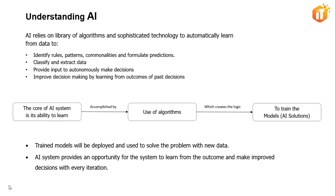As you can see in this diagram, the core of AI is its ability to learn. Just like the human brain, AI systems are trained to learn by use of algorithms which create logic known as models. Once a model has been sufficiently trained, it can be deployed to solve problems with new data as input. With AI systems, there is an opportunity for the system to repeatedly reference and reassess previously input data in order to learn from previous outcomes and improve future outcomes.